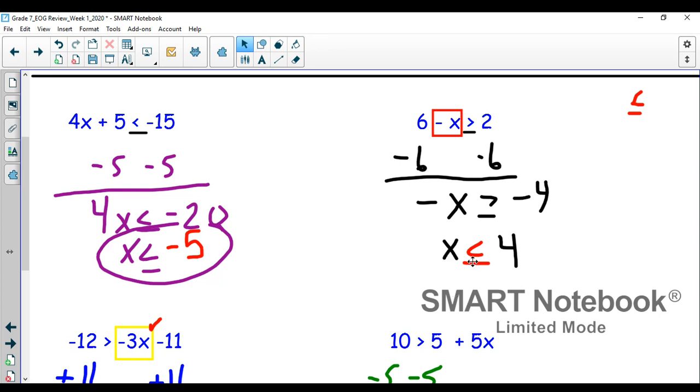x is less than or equal to positive four. The variable was on the left. It stayed on the left. The inequality sign flipped because I had a negative coefficient.